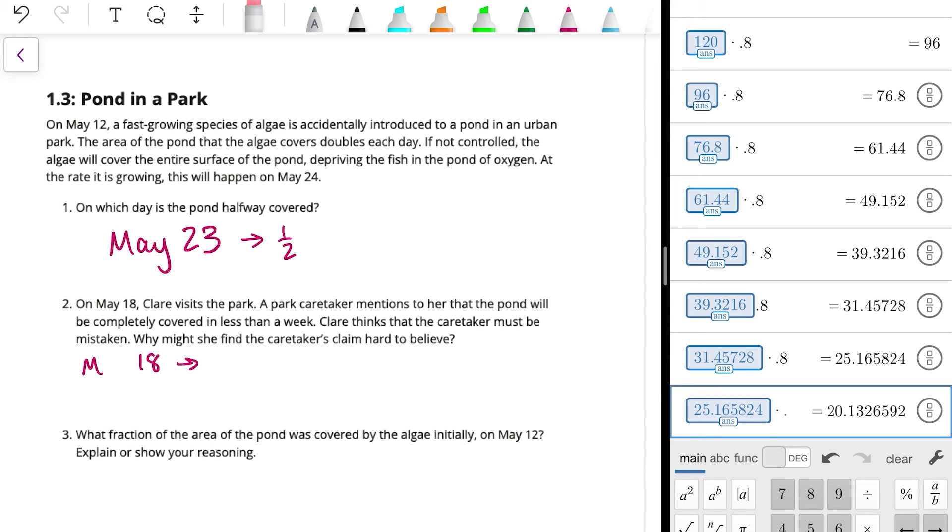On the 22nd, it will be half of half, so that's a fourth. On the 21st, it will be half of a fourth, which is one eighth. On the 20th, it will be half of one eighth, so that would be one sixteenth. On the 19th, it would be half of that, which would be one thirty-second. And then on the 18th, it would be half of that, which is one sixty-fourth.